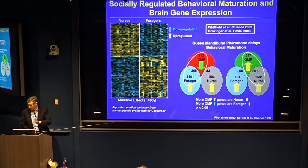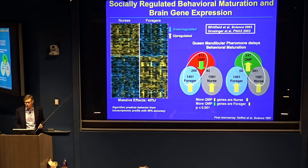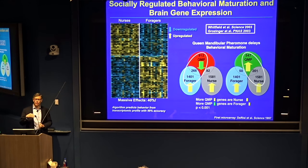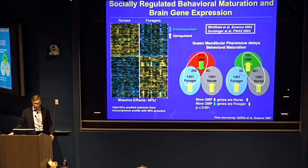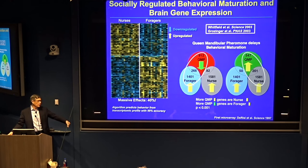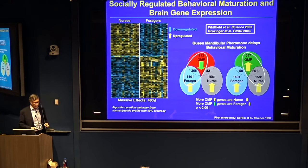That work was led by former postdoc Charlie Whitfield. A second study by former postdoc Christina Grossinger took advantage of queen pheromone, which delays behavioral maturation. Christina found that it behaves exactly as expected for a close relationship: for genes up-regulated in foragers, queen mandibular pheromone (QMP) down-regulates them, and for genes up-regulated in nurses, QMP up-regulates them — giving us a feeling of this close relationship.